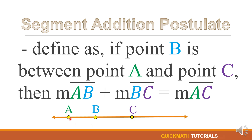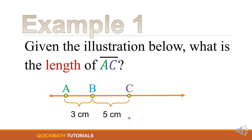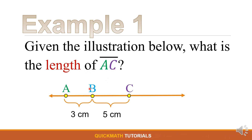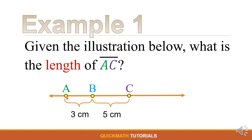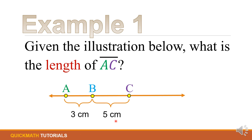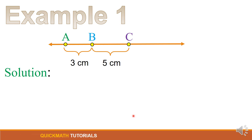For example, we have this illustration where we will find the length of line segment AC. Point B is between point A and point C. We are given the measure of line segment AB is equal to 3 cm and the measure of line segment BC is equal to 5 cm. We will find the measure of line segment AC.